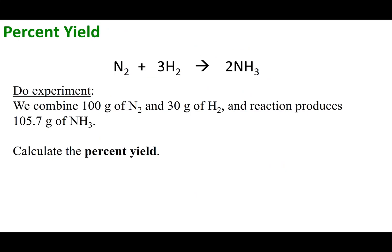Let's do one more calculation. Say I go into lab, and in the real world, I use 100 grams of nitrogen, 30 grams of hydrogen, do the reaction, and produce 105.7 grams of NH3. Since this was actually produced in real life, this is called the actual yield. Now calculate the percent yield.